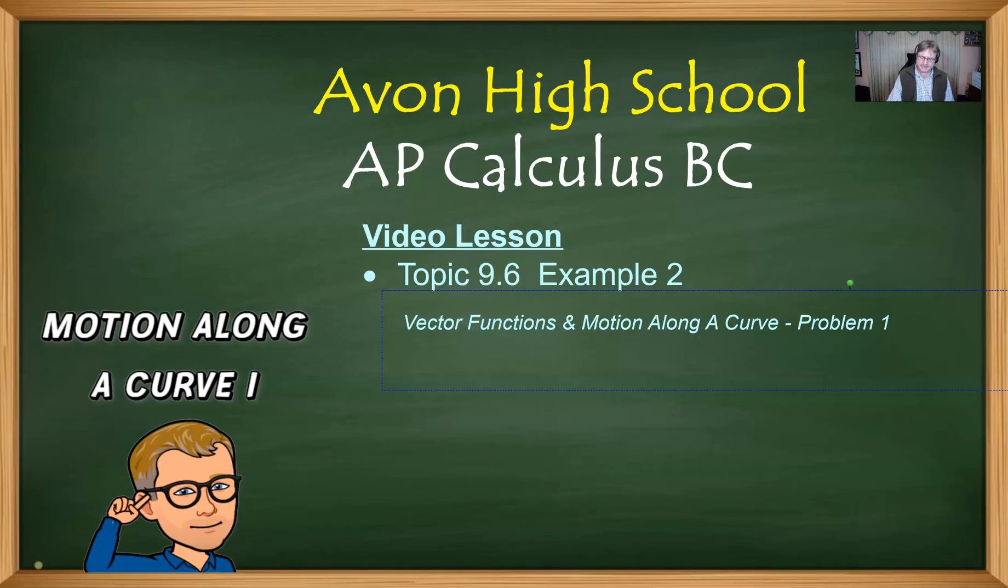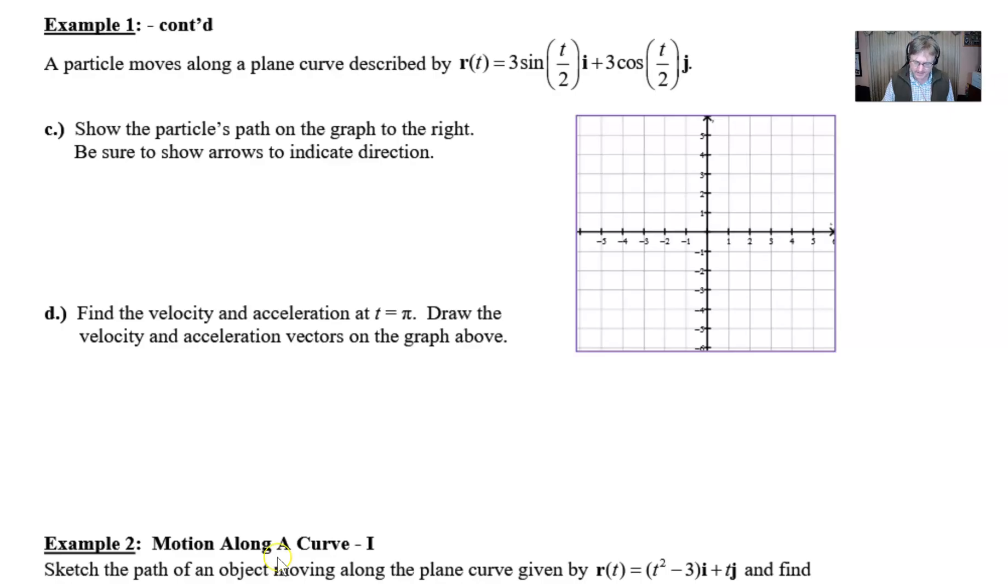Now if we move on to our part C, we were asked to show that particle's path and indicate the arrows of direction. So we're going to graph that nice circle with the radius of 3 and center at 0, 0. That's not too bad. A lot of you don't know this but when teachers go to college they take circle drawing 101 and I got a B minus in that class.